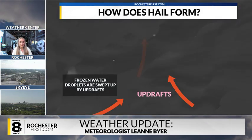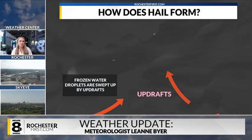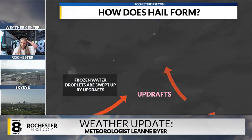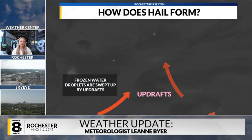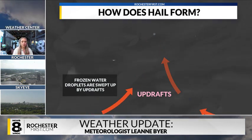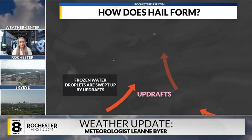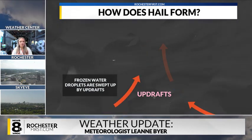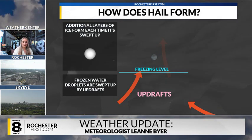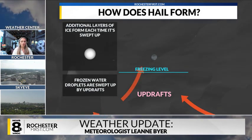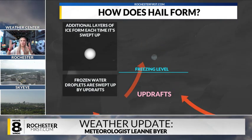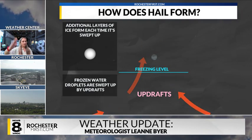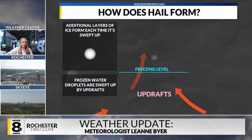We're going inside a thunderstorm. For thunderstorms to essentially develop, you need big updrafts. What essentially happens during these updrafts is frozen water droplets are swept back up into the cloud, where we start to see some frozen water. Additional layers of ice form each time it's swept back up, so as it's going back up this updraft, it's kind of almost like bouncing — it falls a little bit, and then it comes back up.